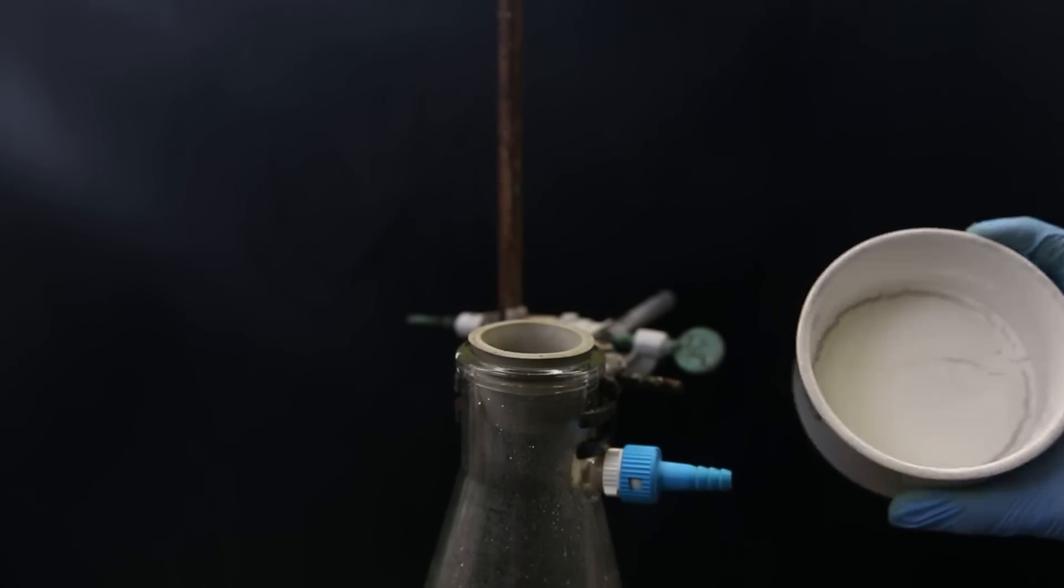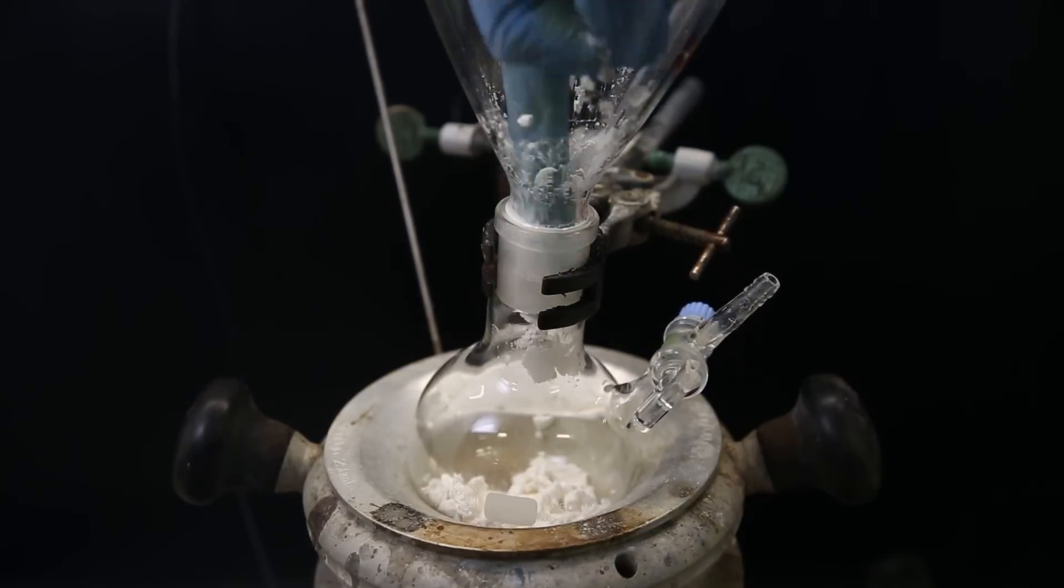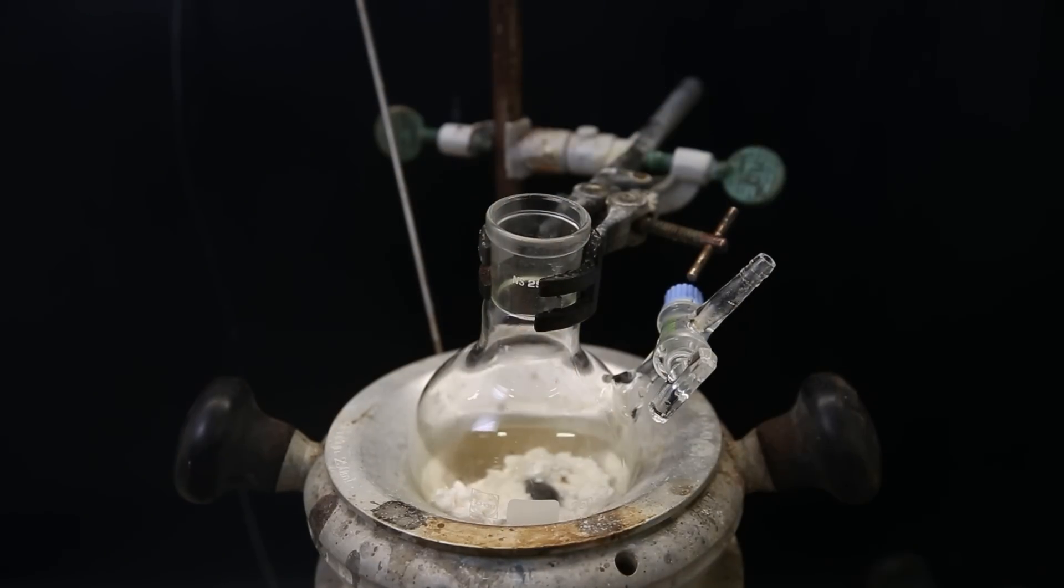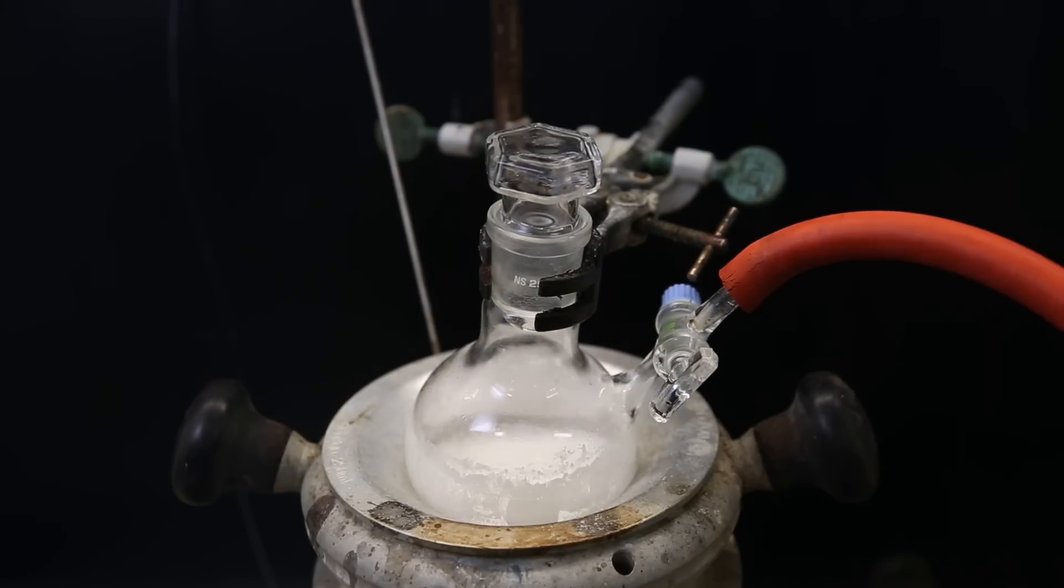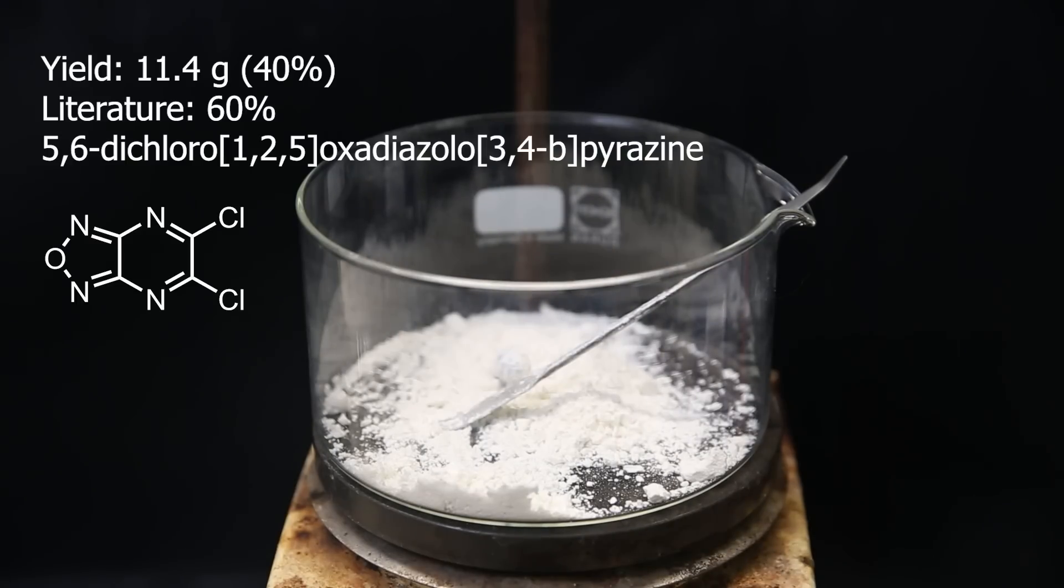I move the wet, pasty product to a flask to dry it again, just like earlier. The last bits I just washed down with acetone, which will get pulled out anyway. When it's dry, I move it all to a dish and the yield turned out to be 11.4 grams, which is 40%, compared to the 60% in literature.